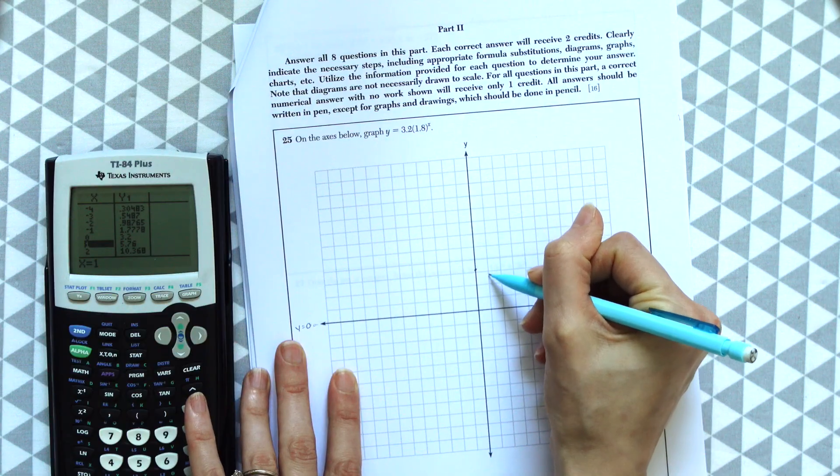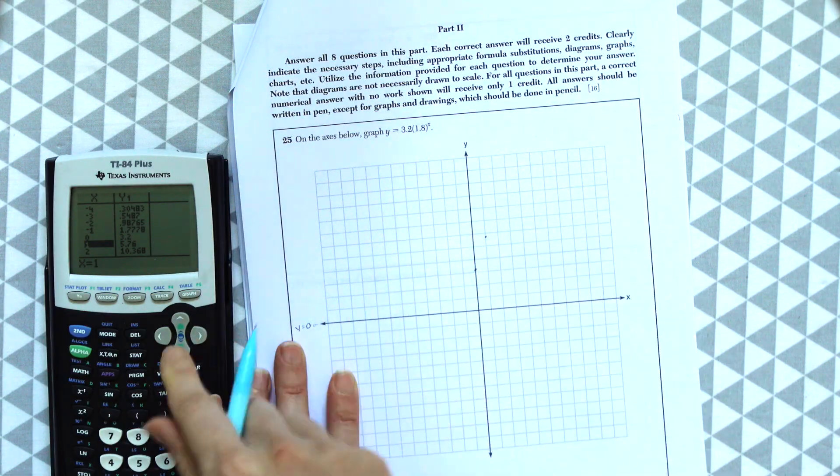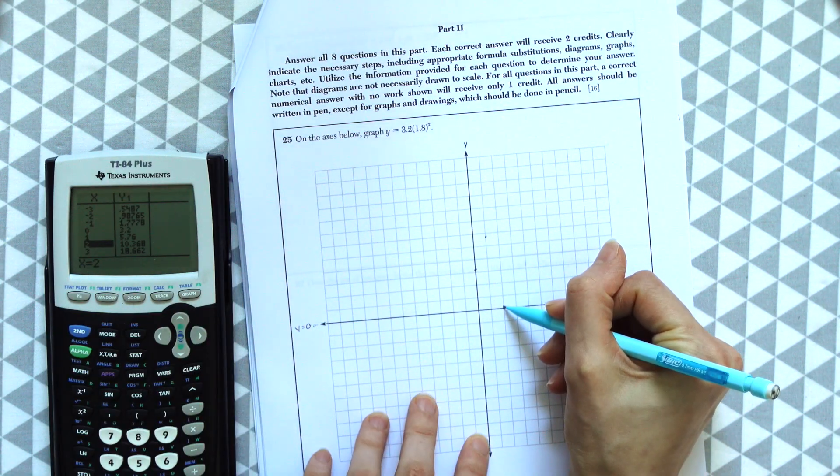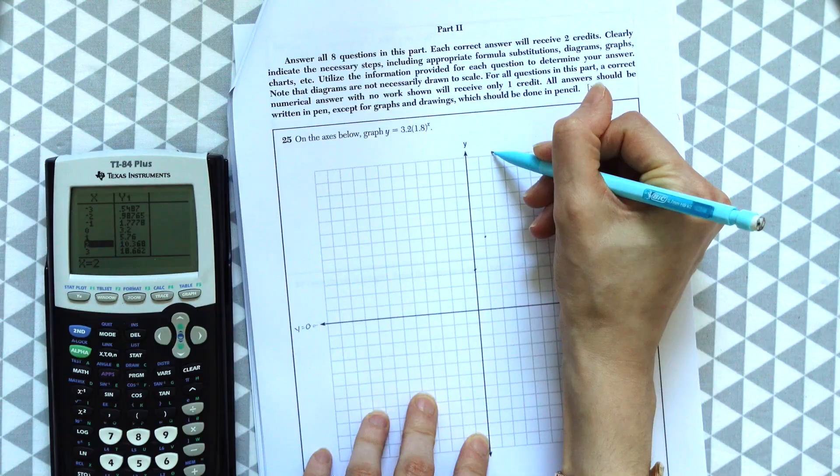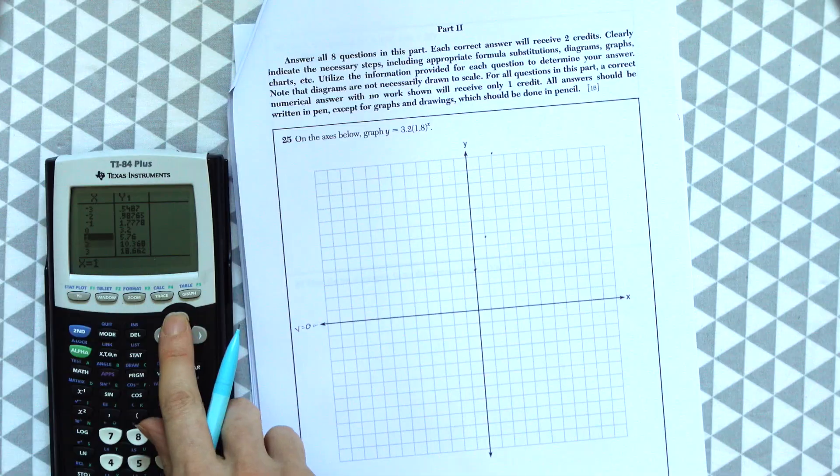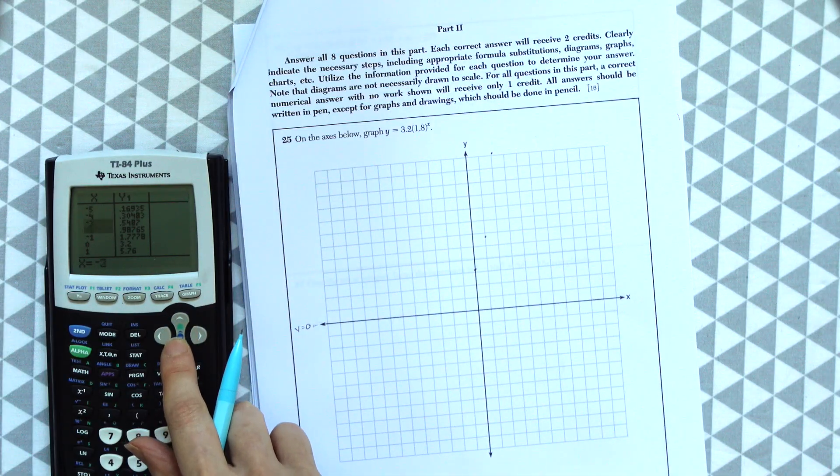So we're going to go to 5.76, it's like around here. 2 is at 10.30. Okay, so this only goes up to 10. So this is going to be around here, a little off the graph. So now let's go back. Let's go to those negative values.